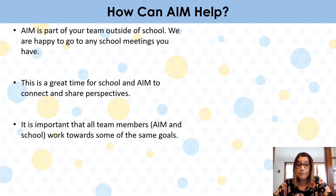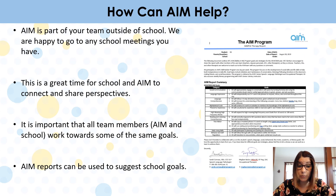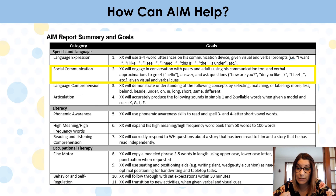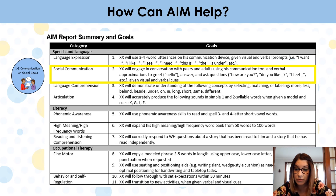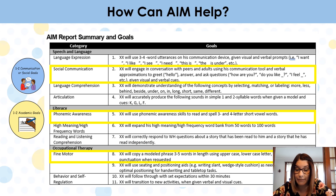It's important that all team members — AIM and school — work towards some of the same goals. Of course we'll have some different ones, but if we can overlap on goals we'll see more progress. You can also bring AIM reports to these meetings and schools will sometimes use them to guide their school goals. For instance, they might pull the social communication goal from AIM and use it for their communication or social goal at school, or pull a phonemic awareness or fine motor goal and use it for their academic goals. It's a nice way to share goals and be on the same page.